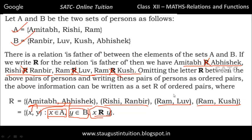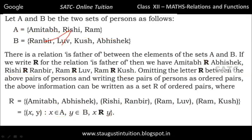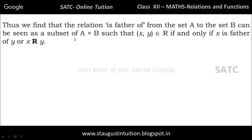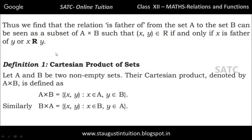Similarly, in the previous example with the father-of relation, A cross B would include all possible pairings of elements from A — Amitabh, Rishi, Ram — with elements from B — Ranbir, Love, Kush, Abhishek. The relation R is a subset of this A cross B.